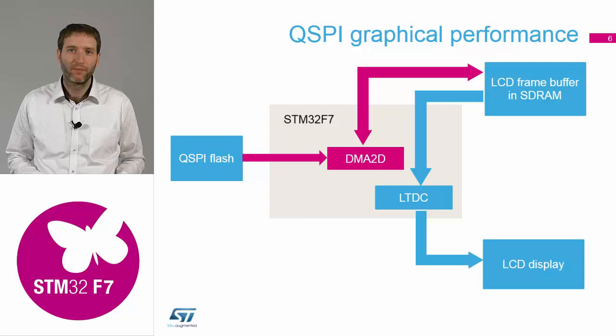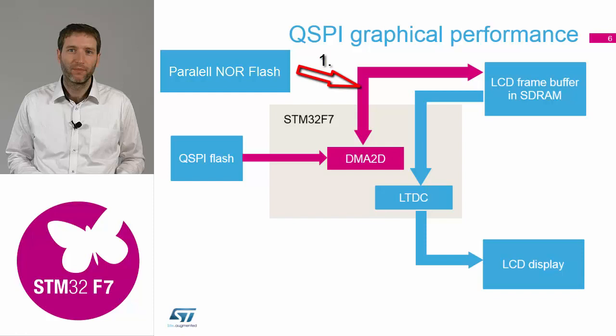Why is it beneficial to have another bus for fetching this data? If you use a parallel memory also on the FMC and you update the framebuffer, you need to consider that there are three data paths simultaneously on the FMC: reading the NOR flash, writing the new framebuffer data to SD-RAM, and continuously fetching the framebuffer from SD-RAM to refresh the LCD. If each of these streams requires several tens of megabytes per second, you can very quickly reach the limit of the SD-RAM.